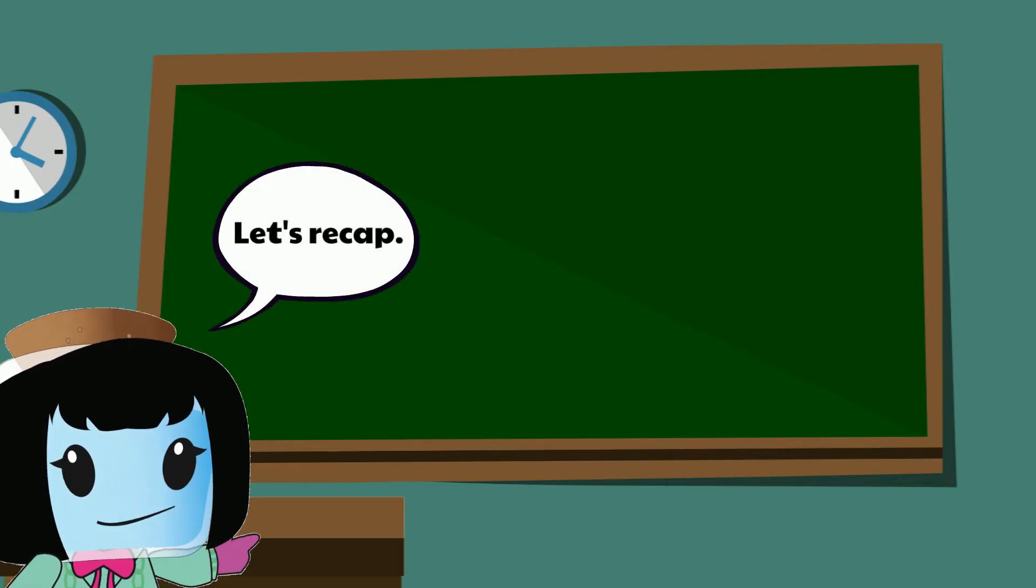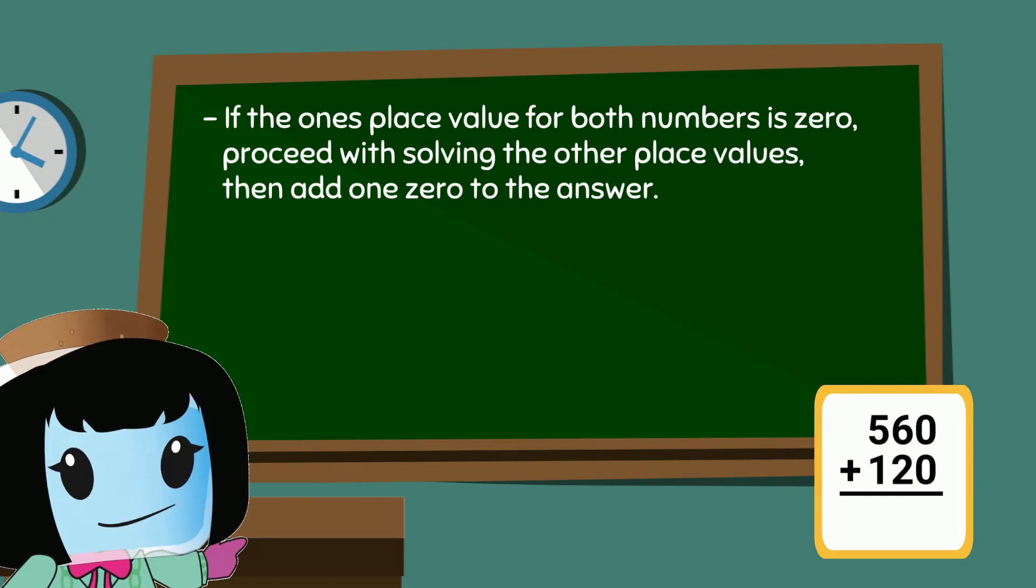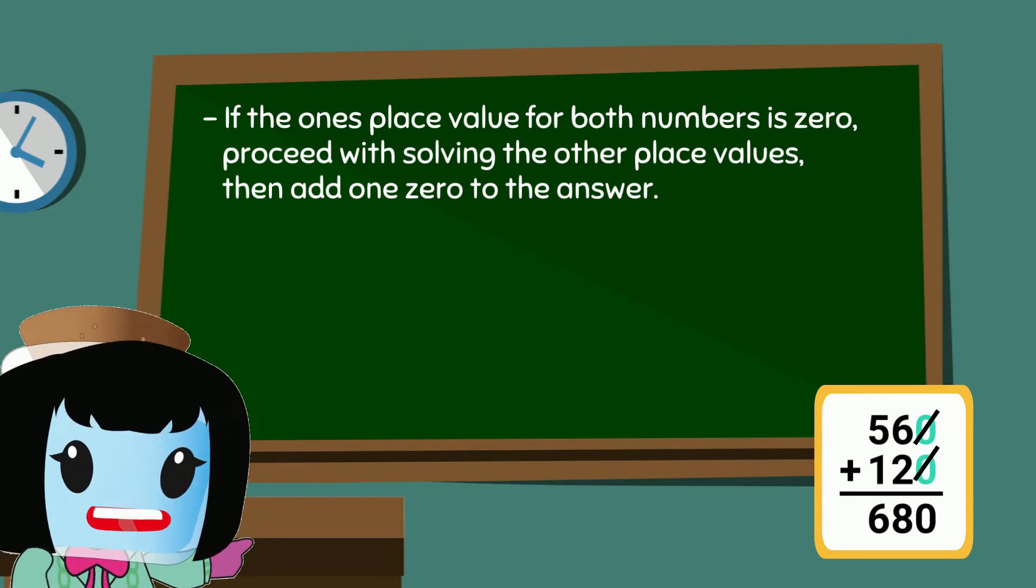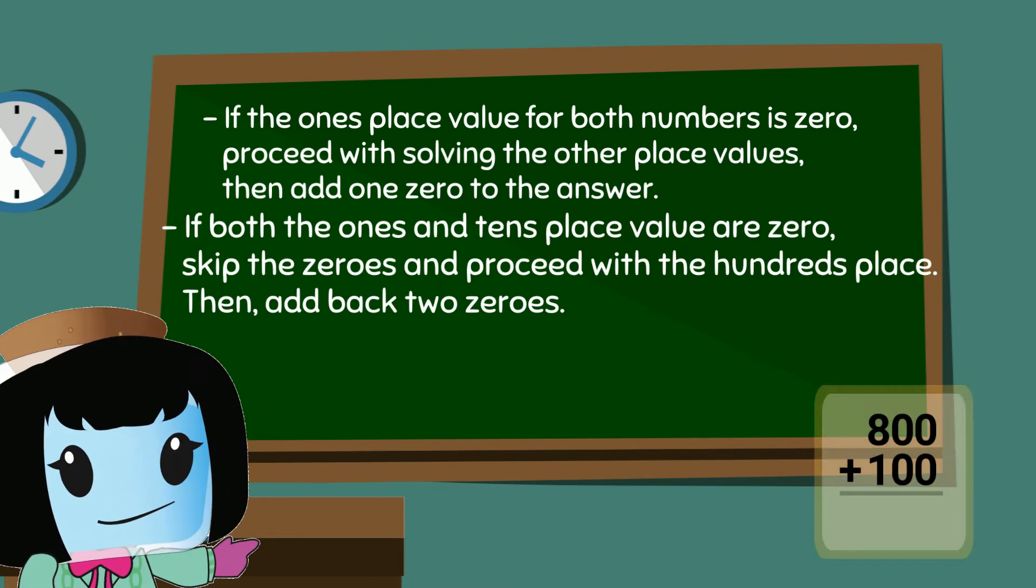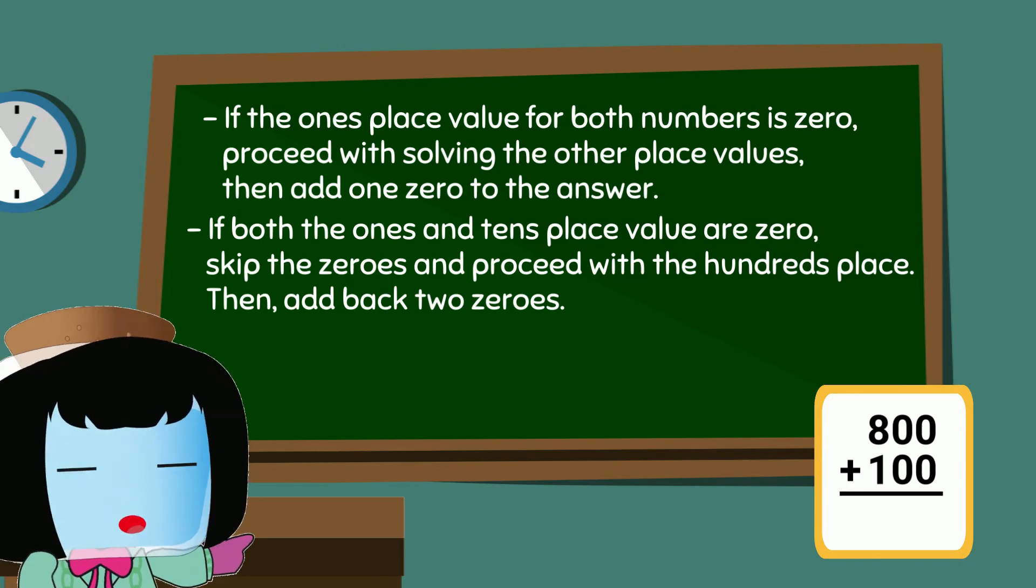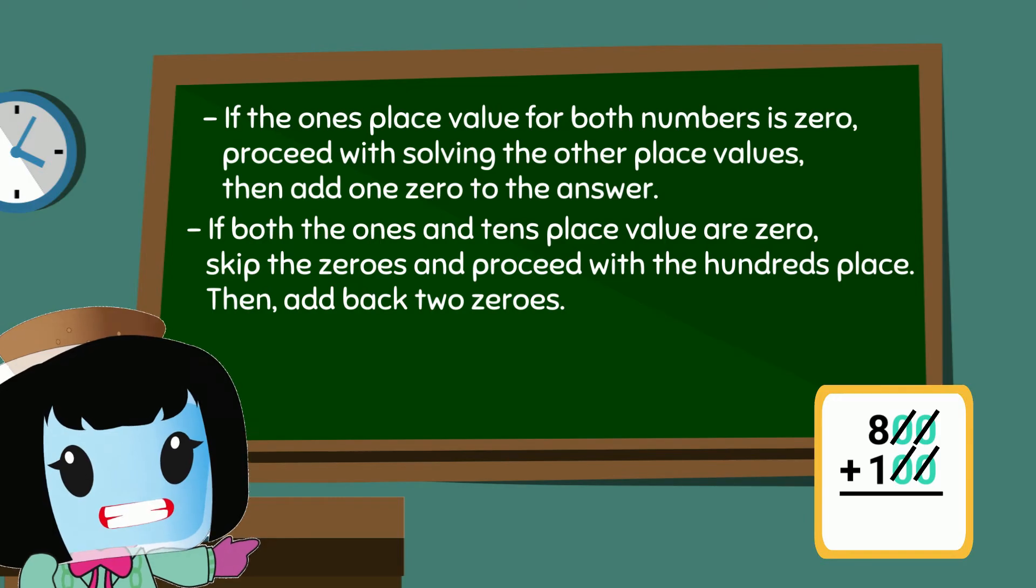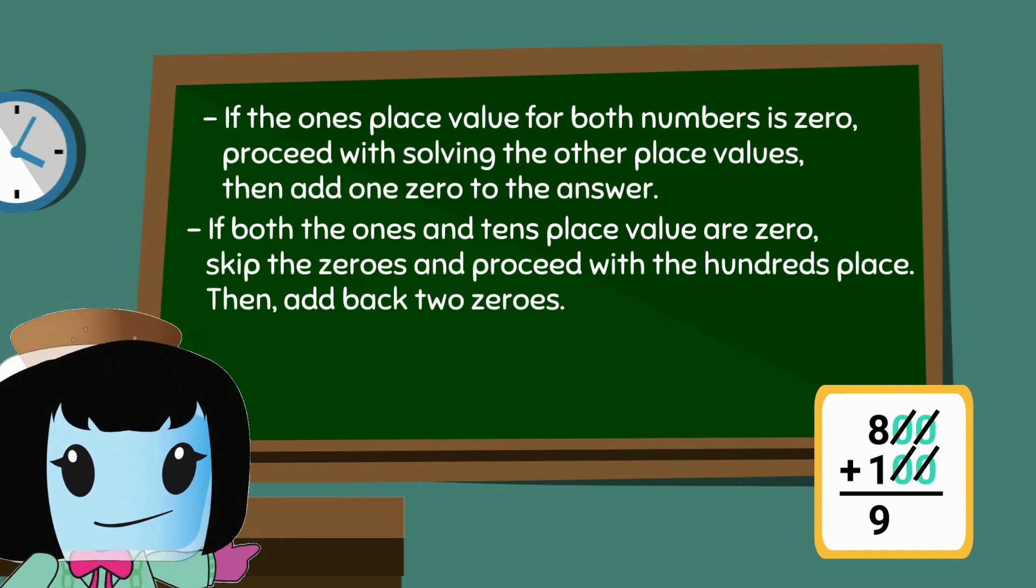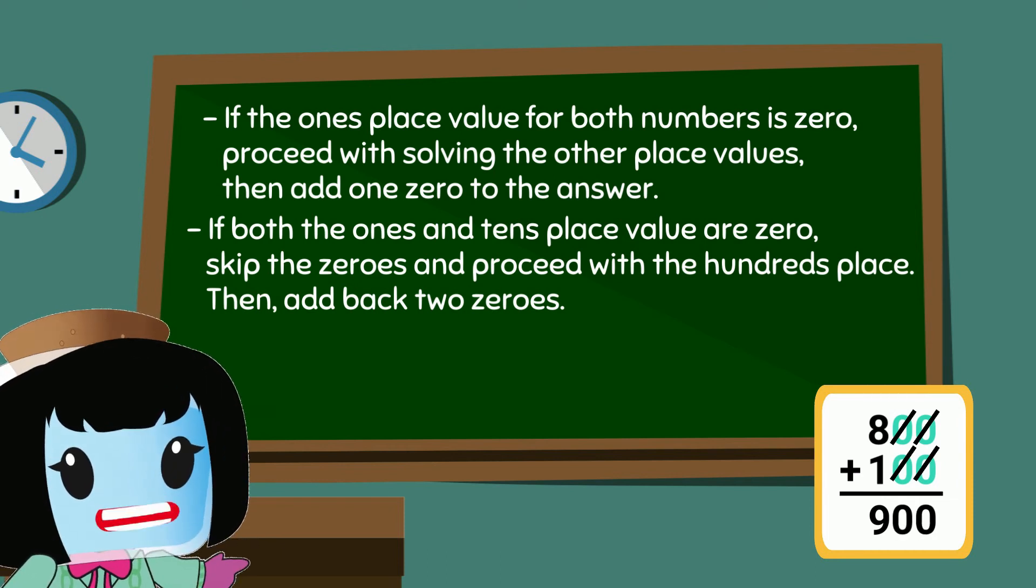Let's recap what we learned from this practice. If the ones place value for both numbers is zero, skip it. Proceed with solving the other place values. Then, just add back one zero to the answer. Similarly, if both the ones and tens places in the numbers are zero, skip the zeros and proceed with solving the hundreds place. Then, just add back two zeros at the end.